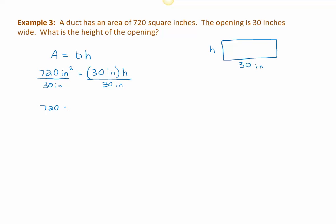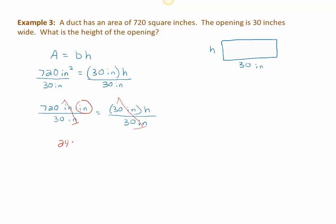720 square inches is 720 inches times inches, being divided by 30 inches. On the right-hand side the 30 inches cancel out on purpose. On the left side, units cancel just like values — one factor of inches cancels, leaving 720 divided by 30, which gives 24, with inches remaining as the unit. On the right side, h is what's left. So the height is 24 inches — and it's inches because those are the units left over when the math is done, not feet or centimeters or anything else.